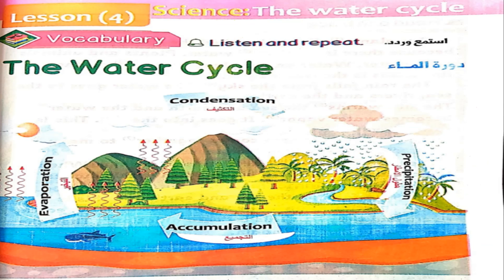Our friend is asking: do you know where water comes from? Water comes from rain, but how does rain form? That is what we will learn in this lesson — the stages of the water cycle. It is called a cycle because it has no beginning and no end; it is a continuous cycle. It starts with Evaporation, then Condensation, then Precipitation, then Accumulation. We will start with the listening passage and explain it in detail afterwards.